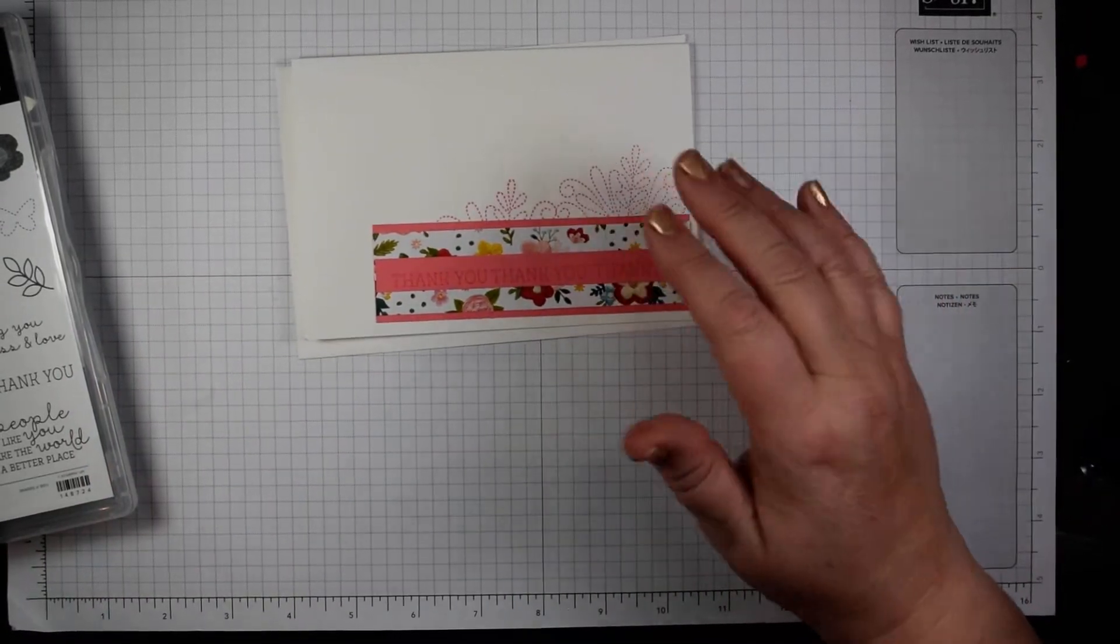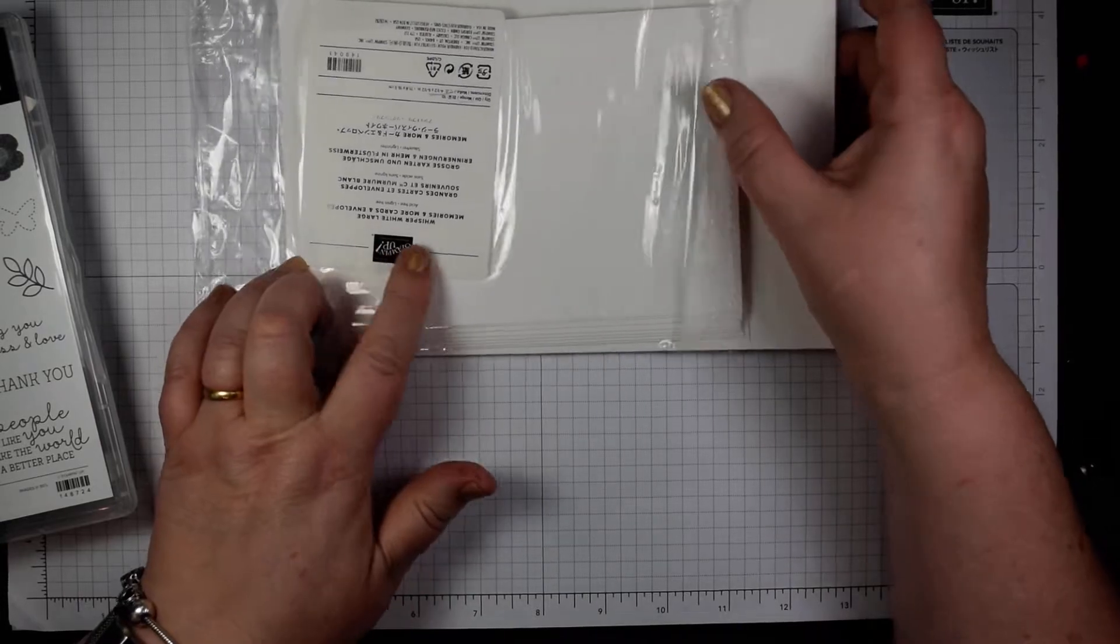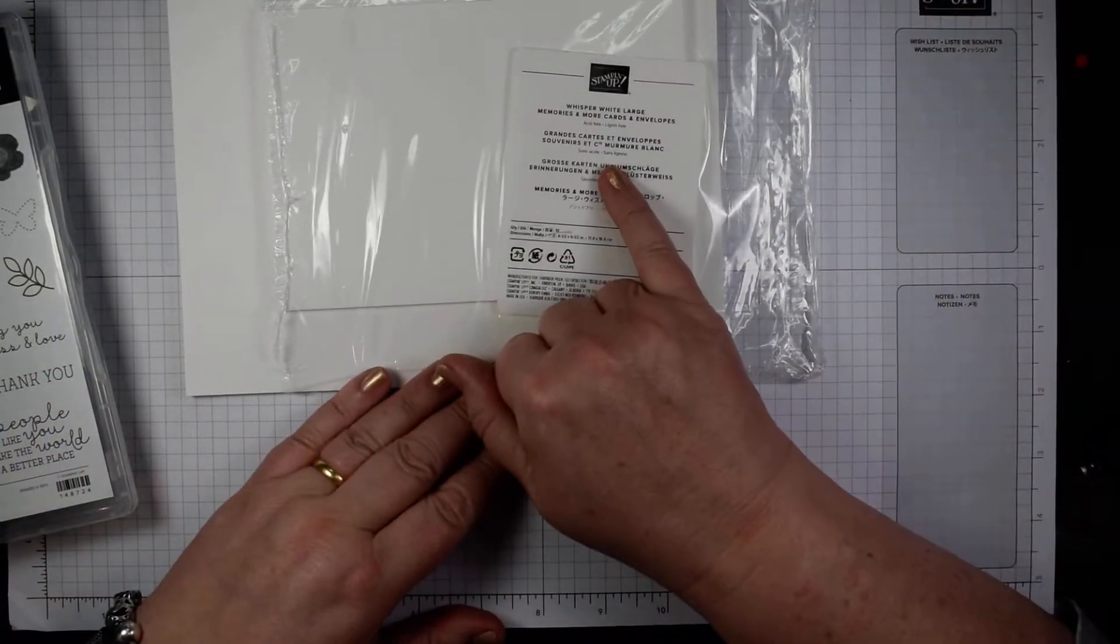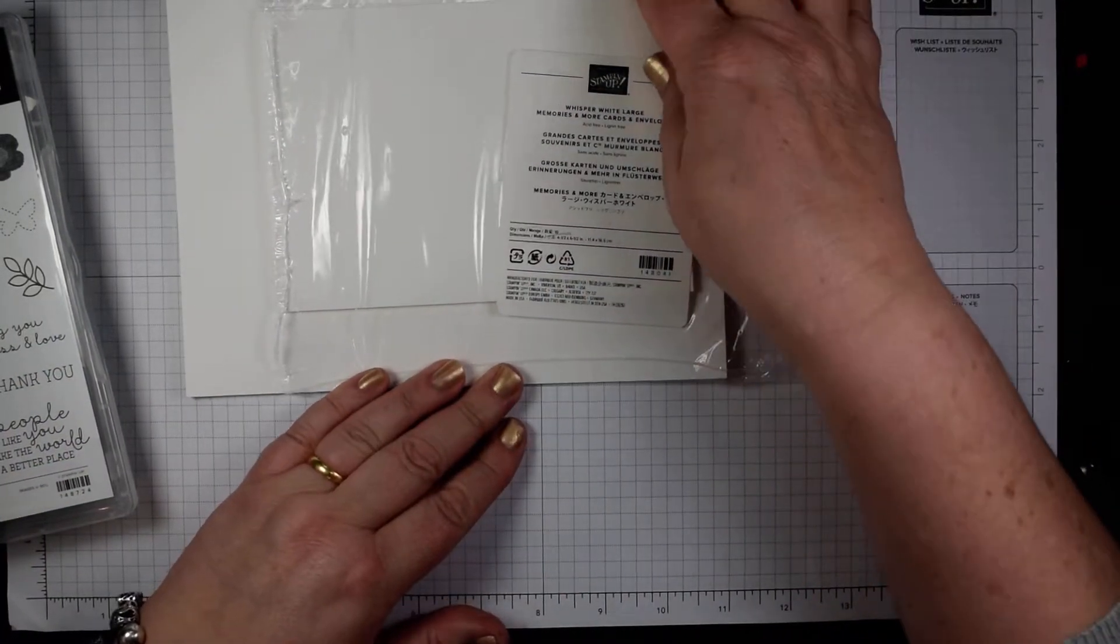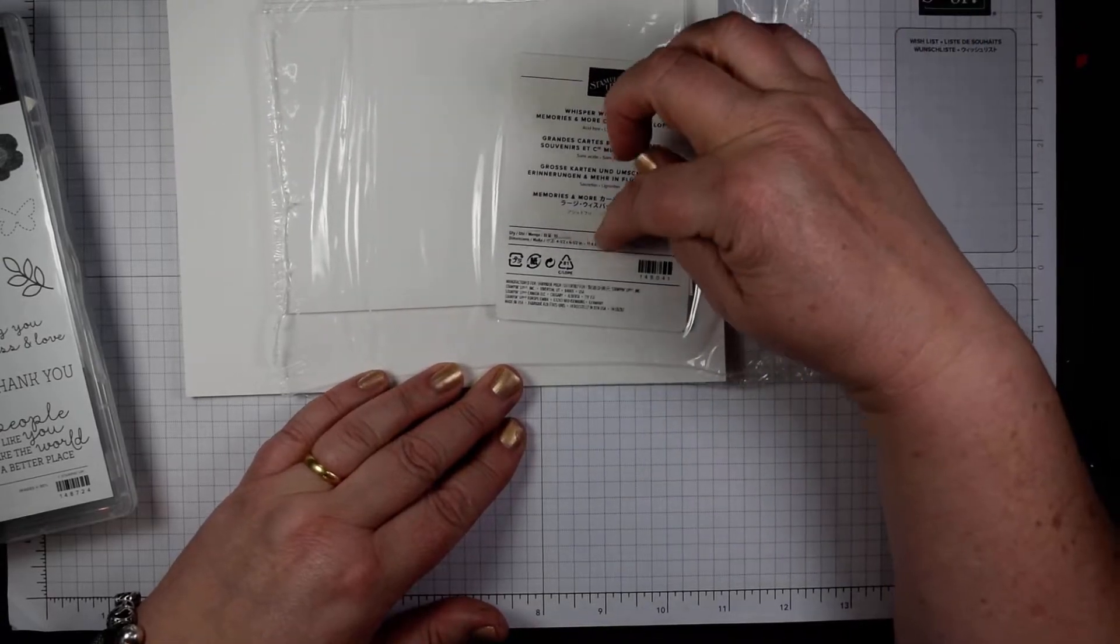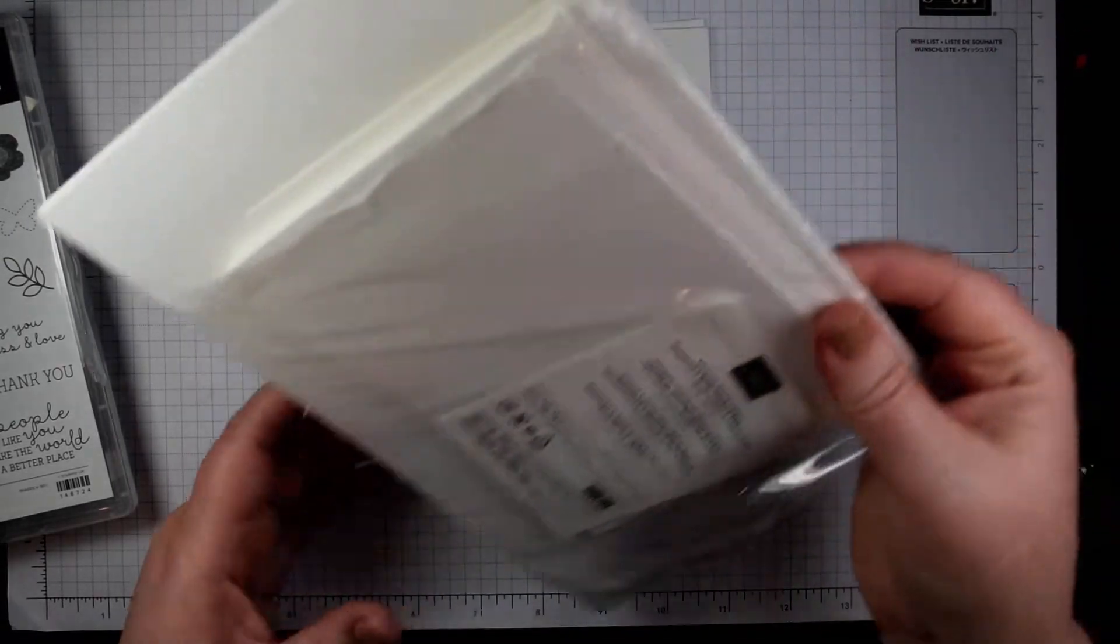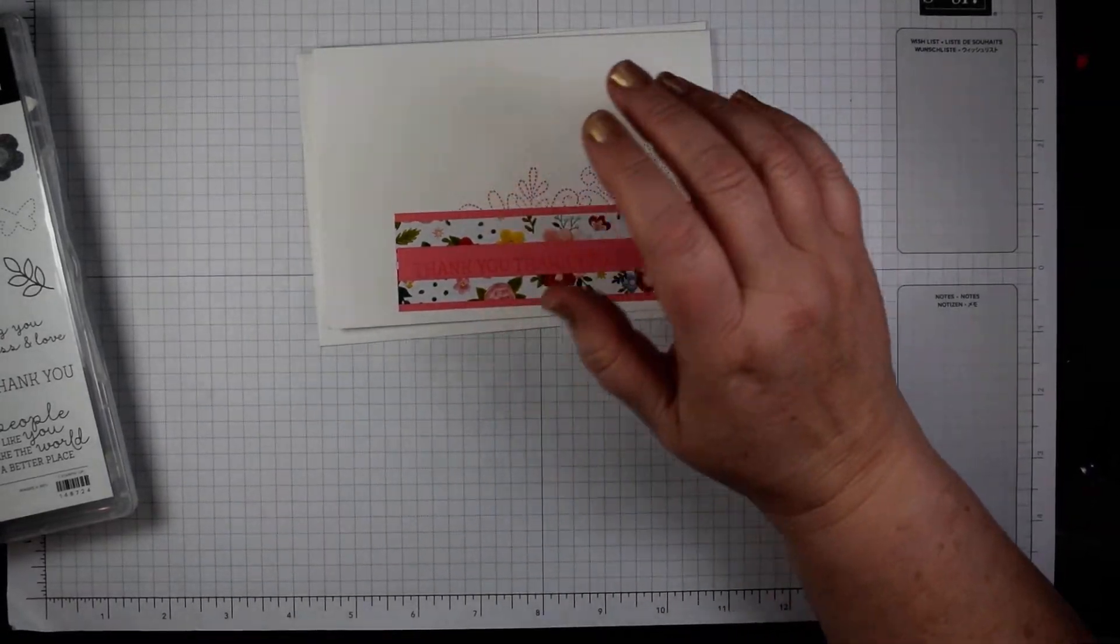So actually what I've used for my card base are the large Memories and More cards and envelopes. Those are four and a half by six and a half inches, so 11 by 16.5 centimeters, fold in half.